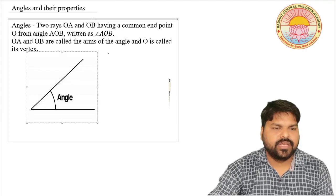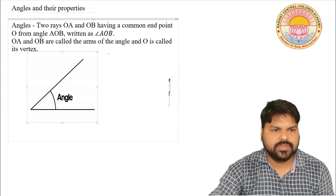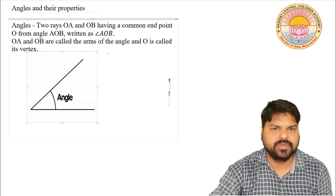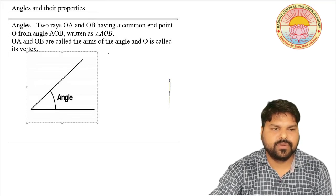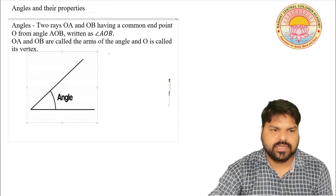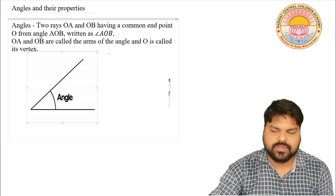An angle is formed by two rays OA and OB having a common end point, forming angle AOB, written as angle AOB. Let us understand the definition.